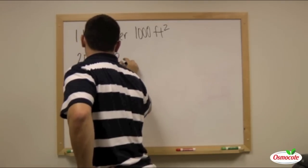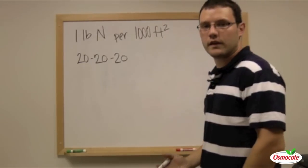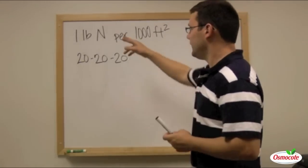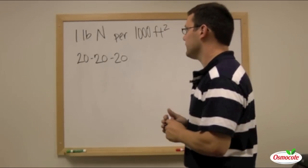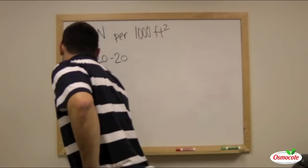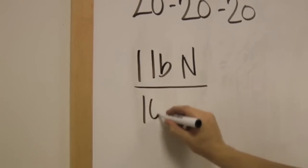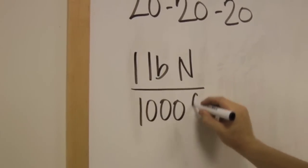We're going to use a 20-20-20 fertilizer. So how much 20-20-20 do we need to put on our yard to equal one pound of nitrogen per 1,000 square feet? That would be one pound of N per 1,000 square feet of turf grass.